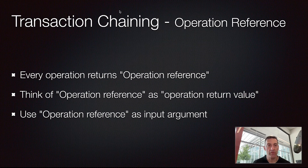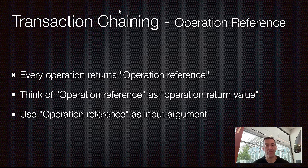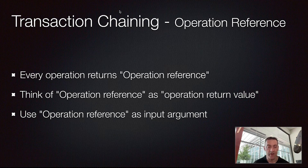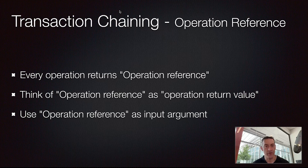Some basic rules for transaction chaining: every single operation has some return value, and that return value in Backendless APIs — both Codeless and the ones available for those who work with code — is going to be referenced as operation reference. Whenever you run an API to retrieve data from the database, create an object, or run bulk create, every single one of those has some kind of return value. For instance, find data objects returns a collection of objects.